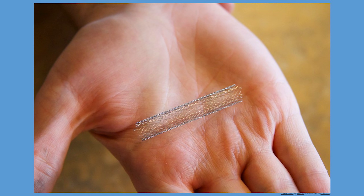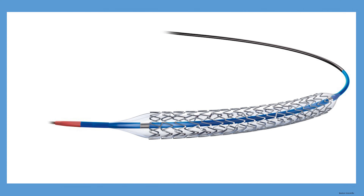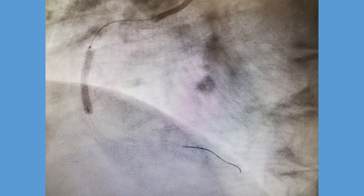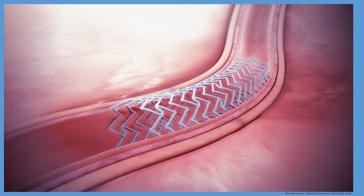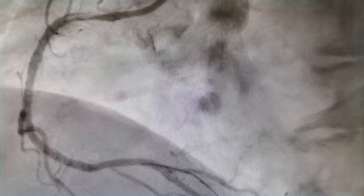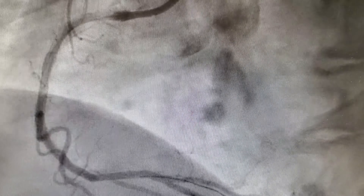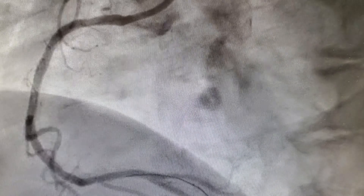After the narrowing has been dilated, the balloon is withdrawn and the stent is then passed over the wire to the area of the blockage. The stent comes pre-packaged and mounted onto a delivery balloon. The stent is then delivered to the narrowed artery and deployed to keep the artery open. This is how it looks during the procedure and how it is expected to show anatomically after the stent is secured in place.